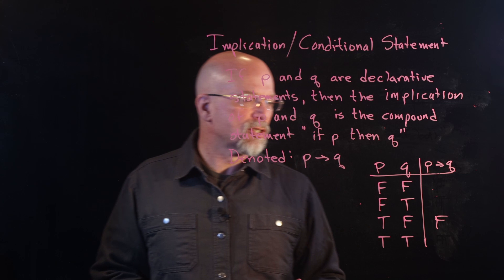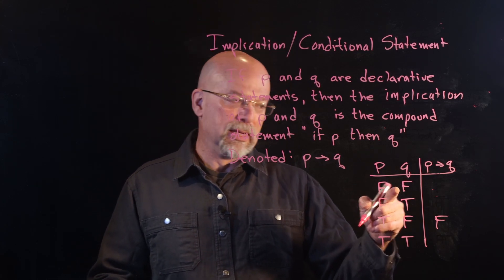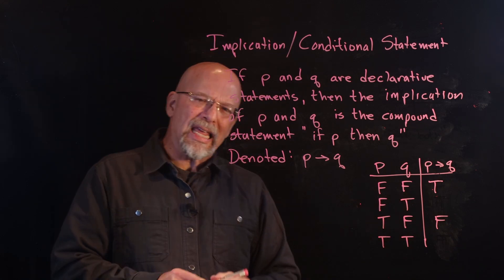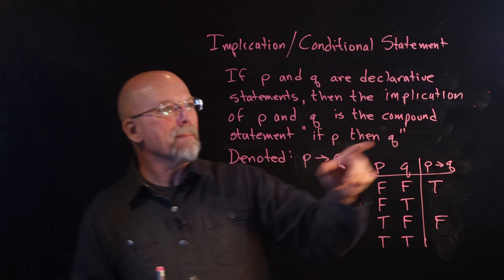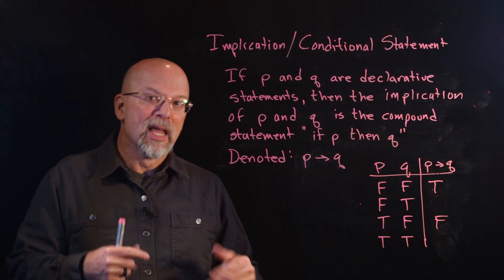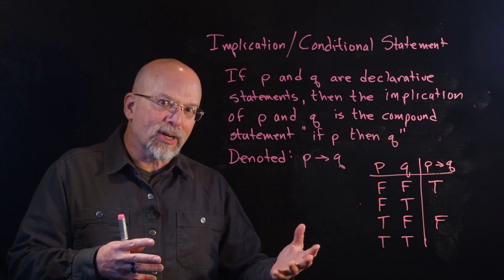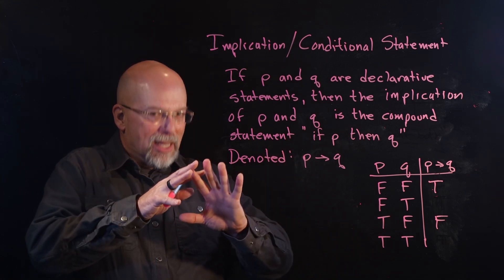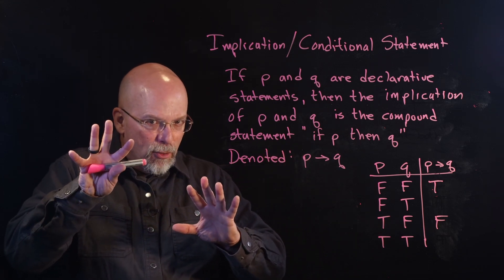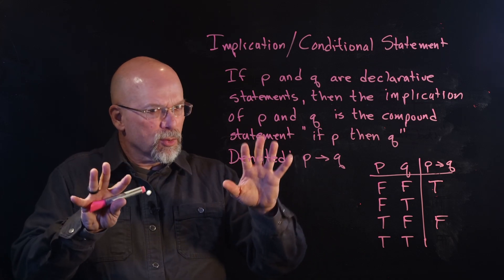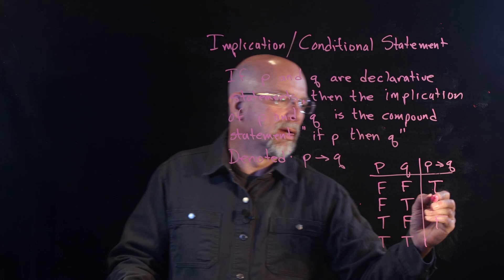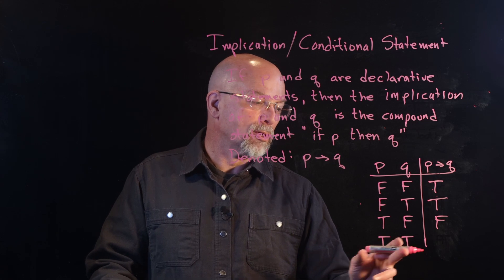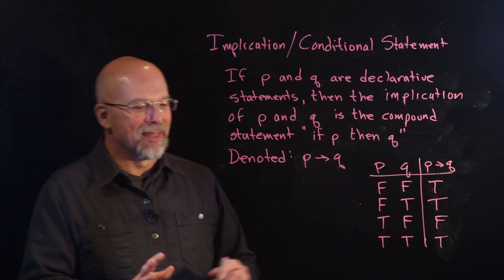All other cases of implication are true. If you didn't clear your plate and didn't get dessert, the statement was honored — true. If you didn't clear your plate but they gave you dessert anyway out of kindness, that doesn't make the statement false — a false antecedent with a true result is still true. And of course if you cleared your plate and got dessert, everyone was happy — true.